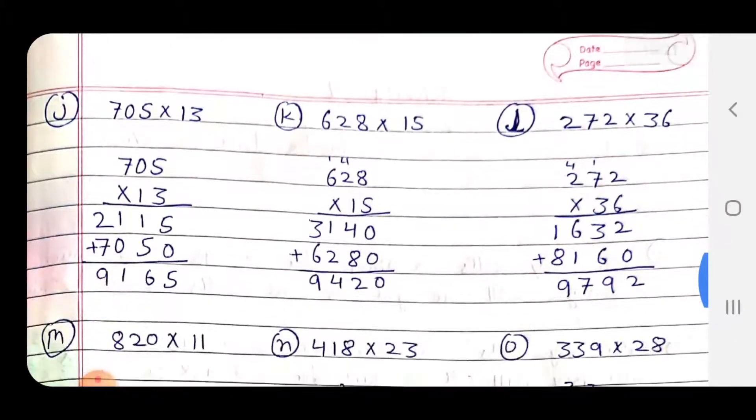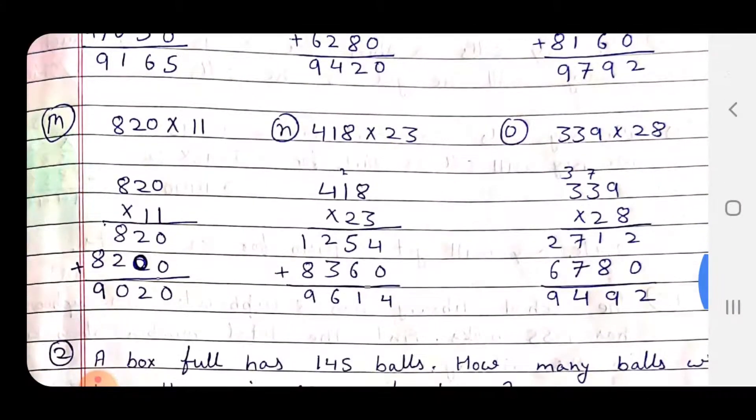Now J, K, L, M, N, O - all of these I have done for you. Last question: just see 339 x 28. 8 x 9 = 72, 7 carry over. 8 x 3 = 24 plus 7 = 31, 1 here, 3 carry over. 8 x 3 = 24 plus 3 = 27. Now 2 x 9 = 18, 1 carry over. 3 x 3 = 6 plus 1 = 7. 3 x 2 = 6. 2 x 8 = 1, 9. 7 x 1 = 4. 6 x 2 = 8 plus 9.